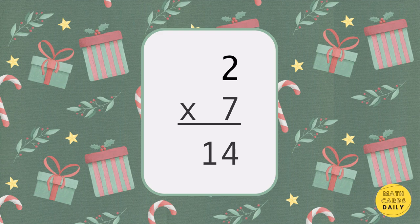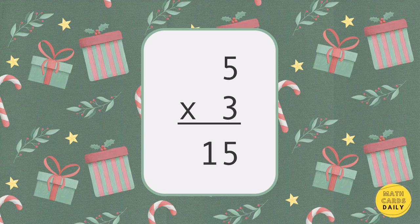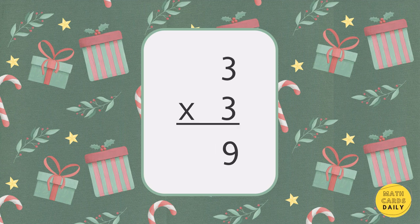2 times 7 equals 14. 6 times 6 equals 36. 5 times 3 equals 15. 9 times 5 equals 45. 3 times 3 equals 9.